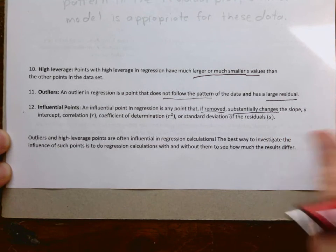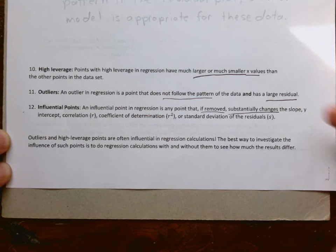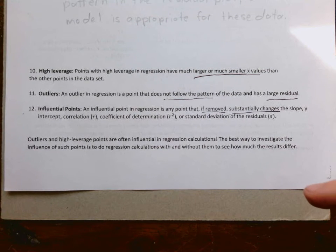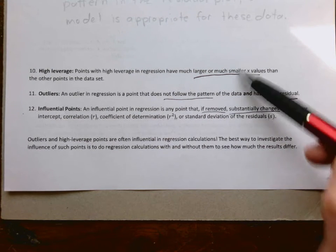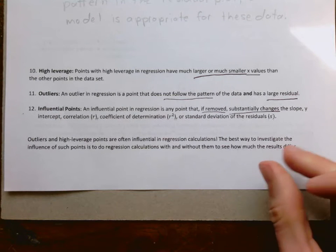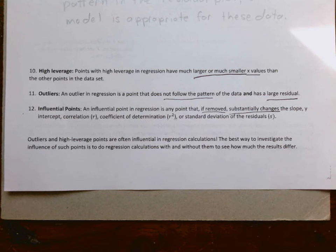A point can meet multiple criteria. It can be both an outlier and an influential point, or a high leverage point and an influential point. It's unlikely that it would be both high leverage and an outlier. But outliers and high leverage points often have big or outsized influence on regression. So if it's an outlier or high leverage point, it's probably going to be an influential point.